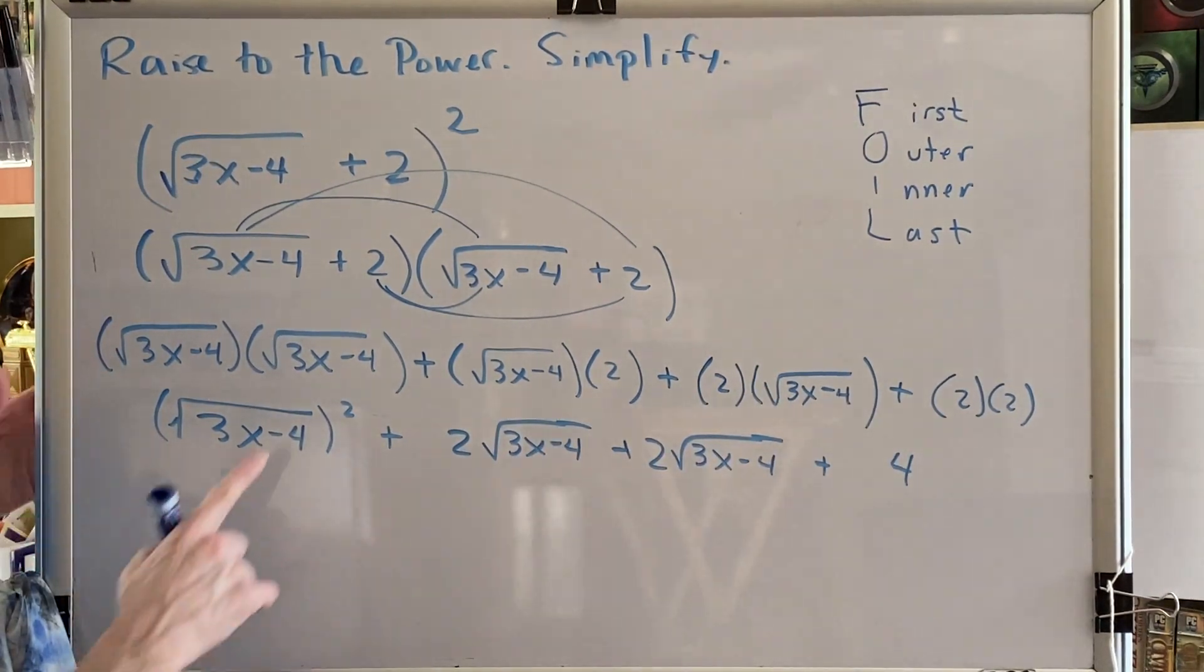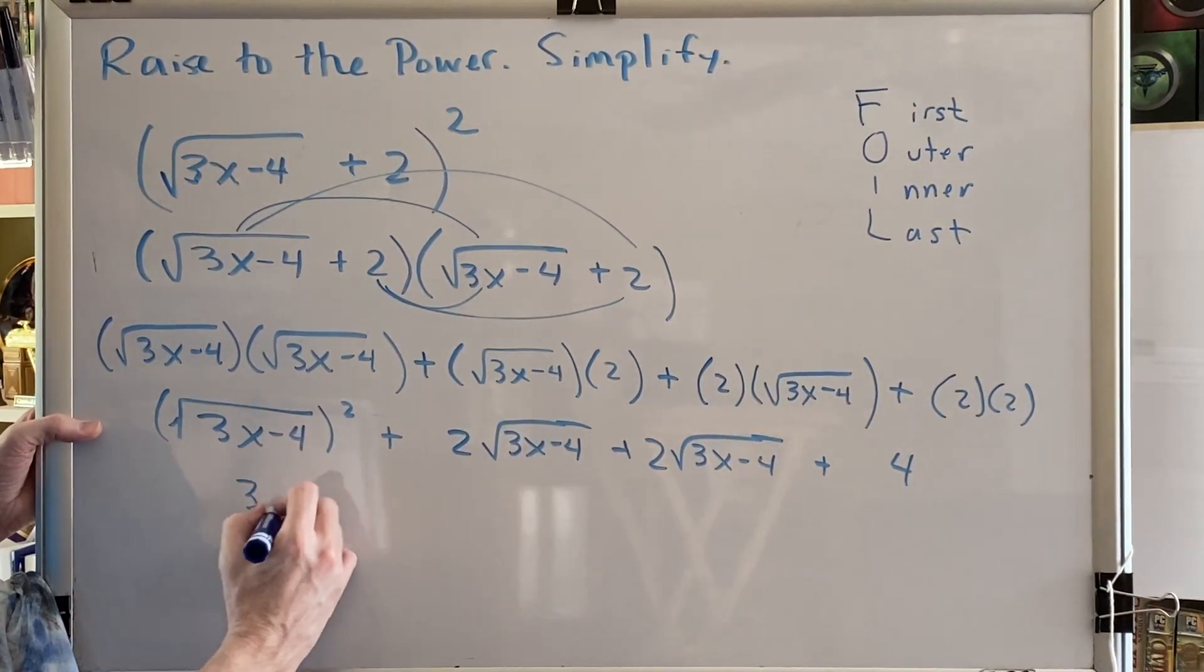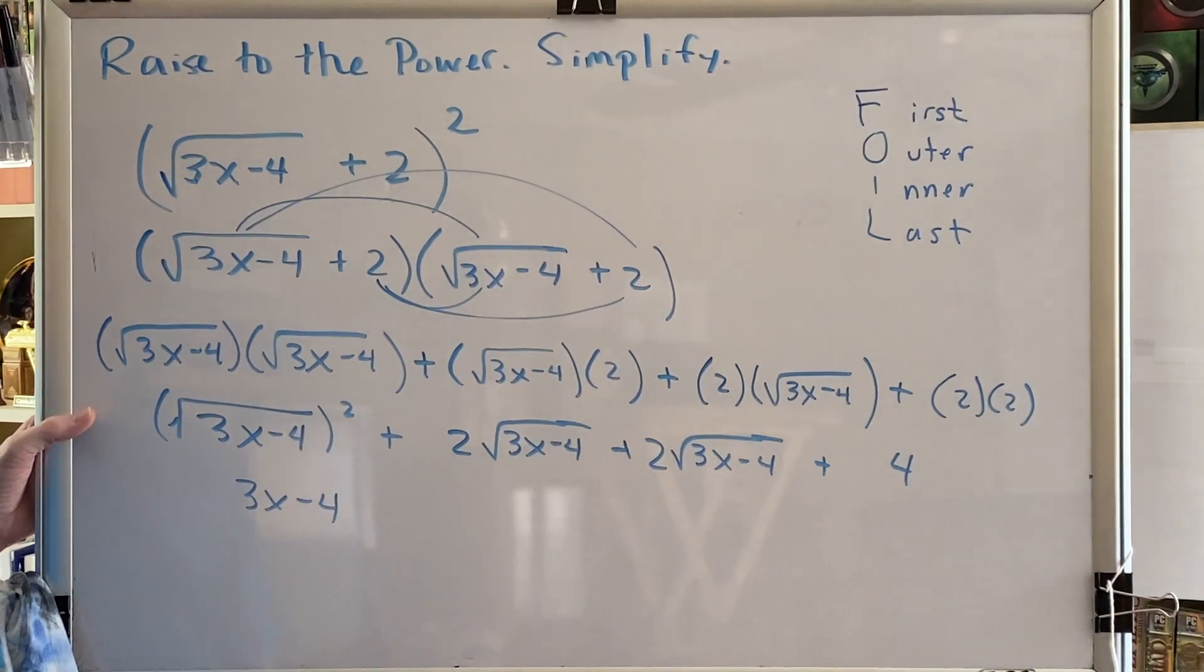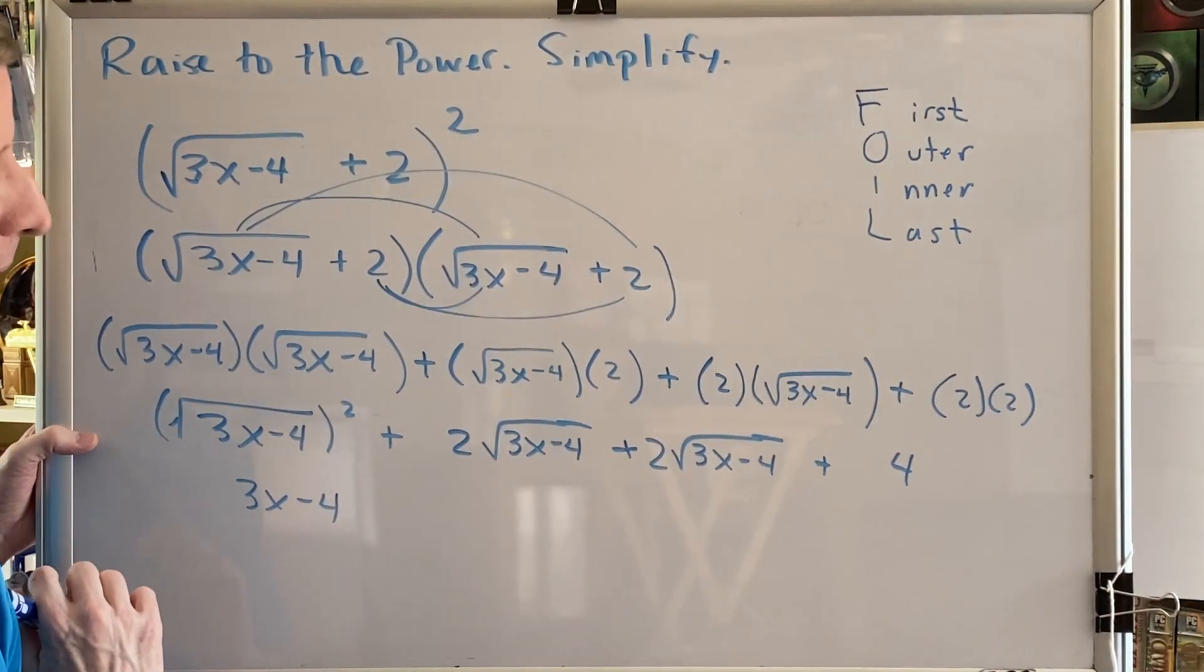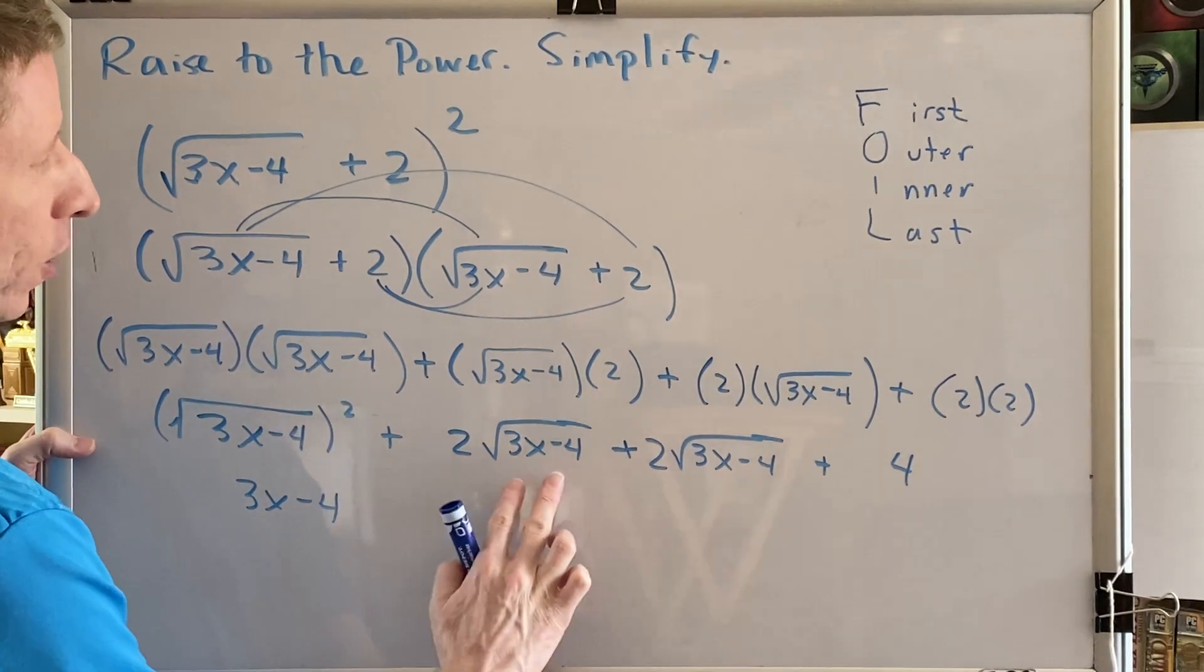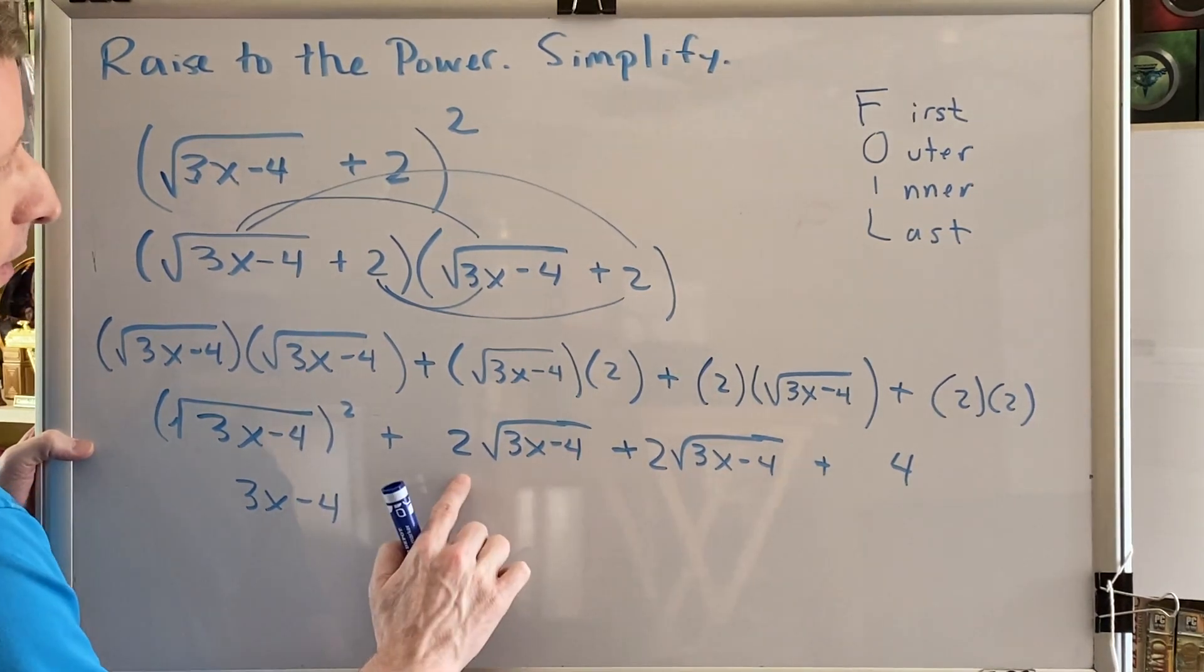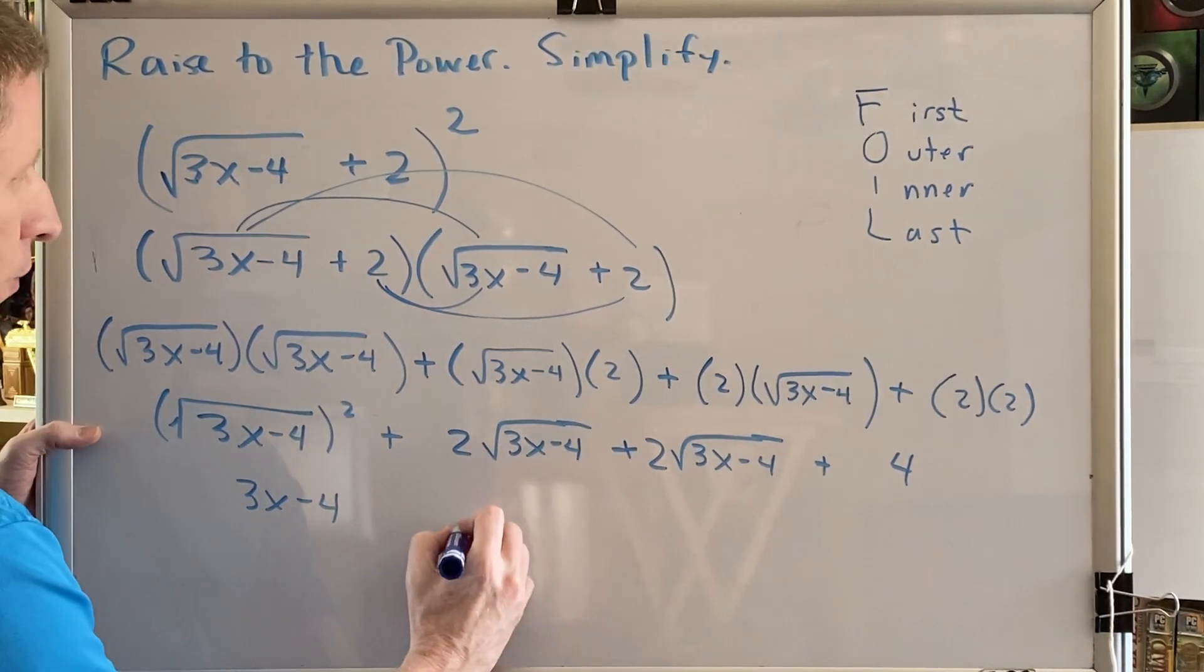Continuing to simplify, square and square root cancel, so we have 3x minus 4. These two like radicals can be combined by keeping the radical part the same, but combining the coefficients. 2 plus 2 is 4.